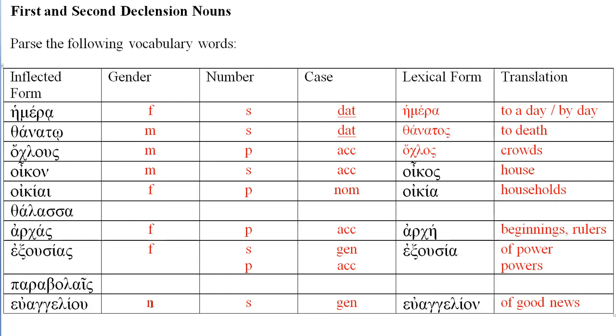So these are some examples of parsing first and second declension nouns using a lexicon and a chart of endings.